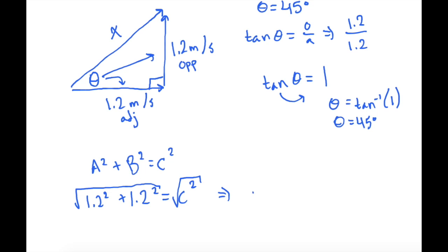So let's go ahead and grab our calculator and do that. So we have the square root of 2 times parentheses 1.2 squared. And that gives us final speed of 1.697 meters per second.